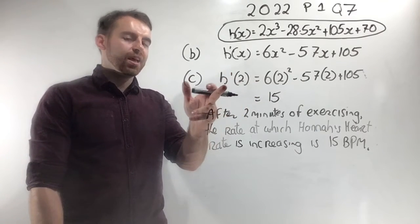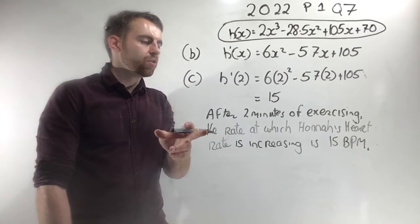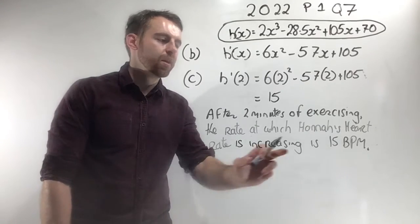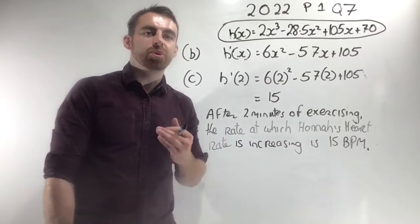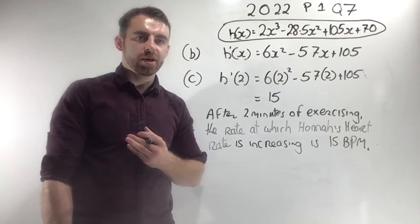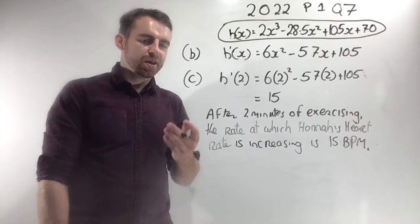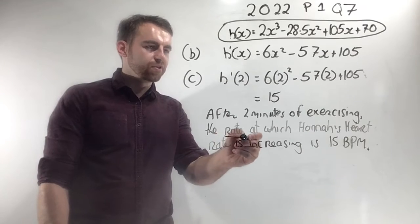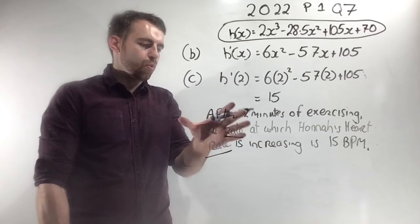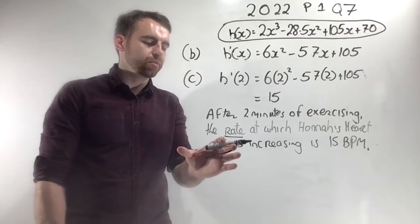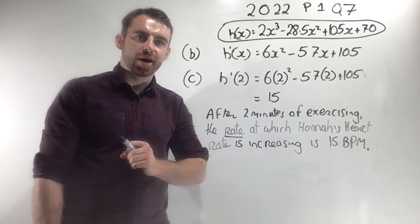Based on the fact that h'(2) equals 15, we can say that after 2 minutes of exercising, the rate at which Hannah's heart rate is increasing is 15 beats per minute. We're not saying her heart is beating only 15 times per minute — we're saying that's the rate at which her heart rate is increasing. The wording is confusing because we have the rate of change from the derivative and the heart rate itself, but that's what you need to get right for the full marks.